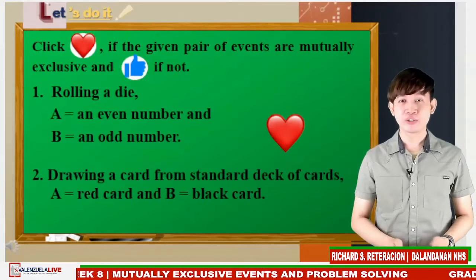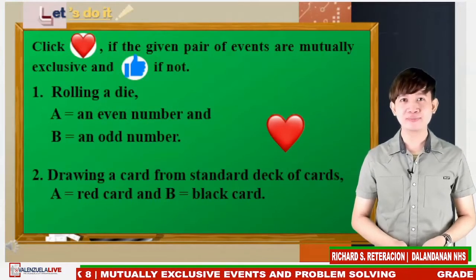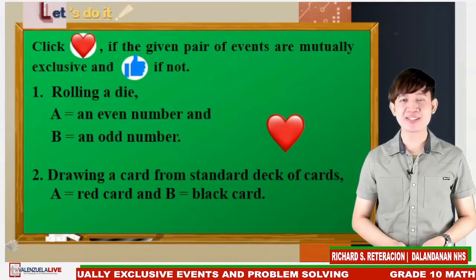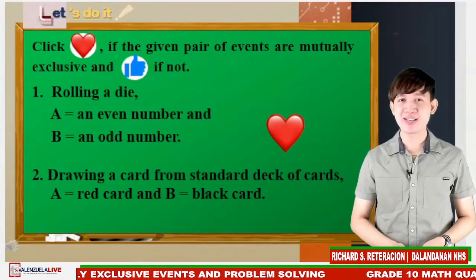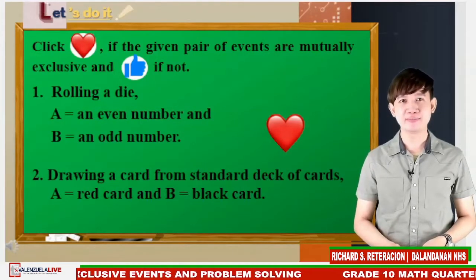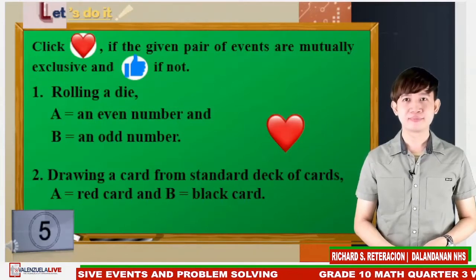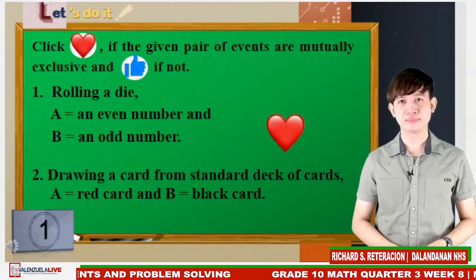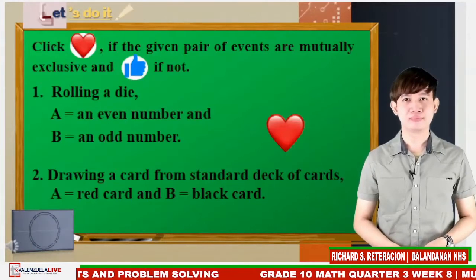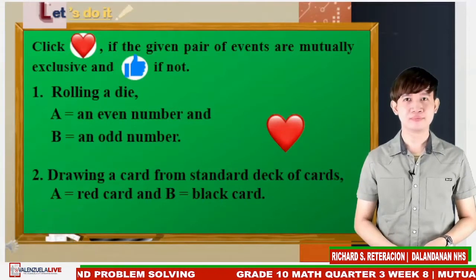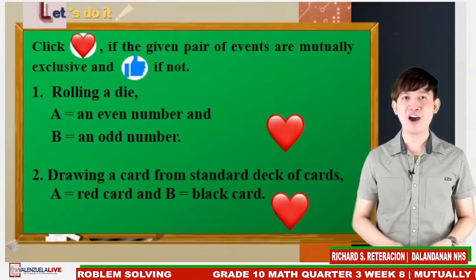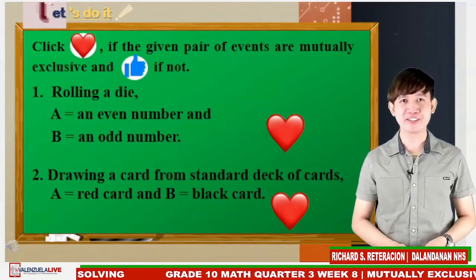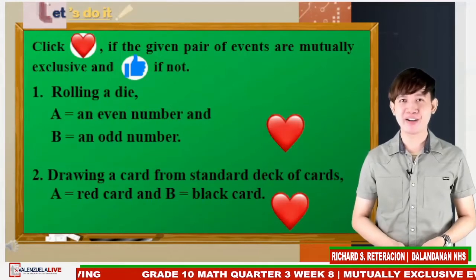Number 2: Drawing a card from a standard deck of cards. A is a set that contains the red card and B is a set that contains the black card. Correct — heart emoji. It is not possible to have a common card between red and black cards.